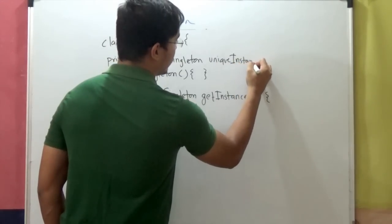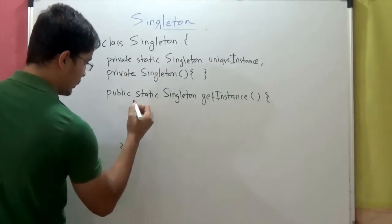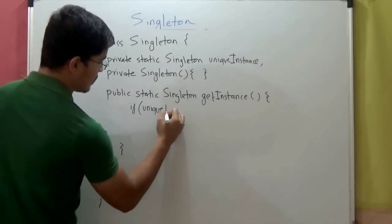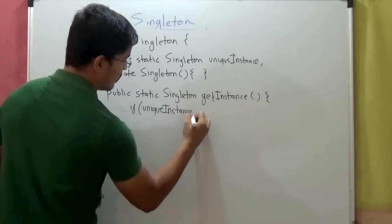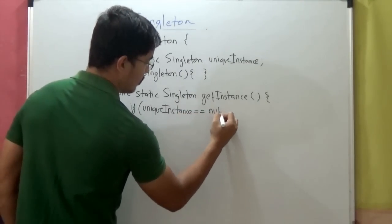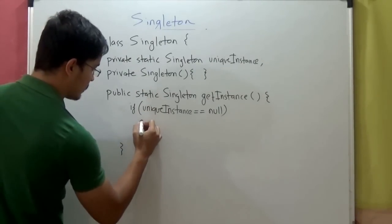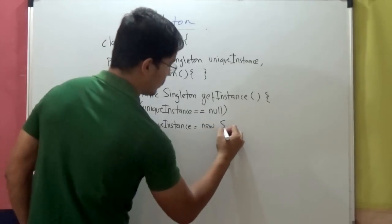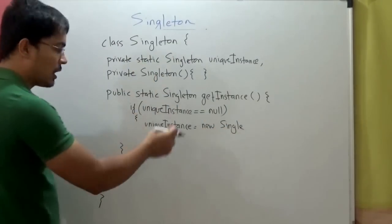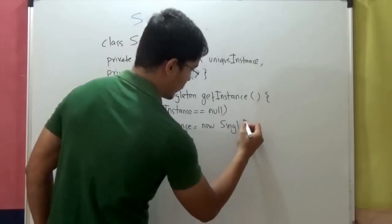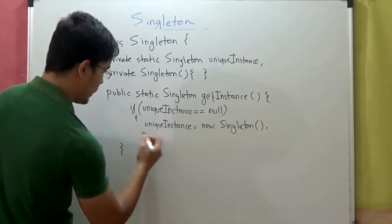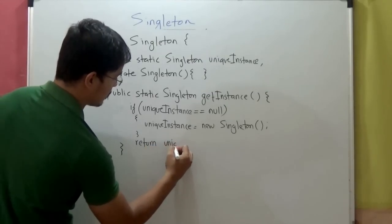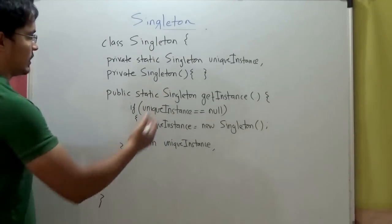So this is the field, and we will check if uniqueInstance equals null — only if it has not yet been created, we will say uniqueInstance equals new Singleton. As the constructor is private, we can only call it from within the class, so we can call it here, create an instance, and then return uniqueInstance.